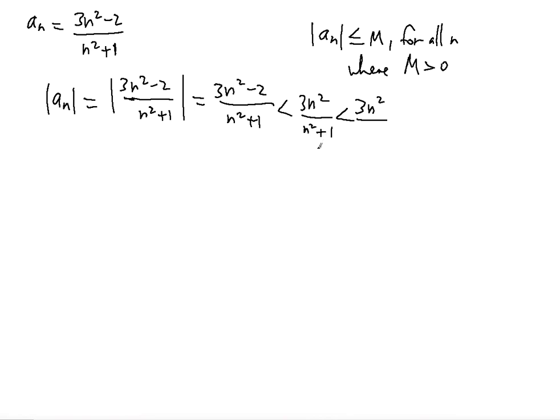So you're making the denominator smaller and then in return you're making this fraction bigger. Because the denominator got smaller so you will have n squared.